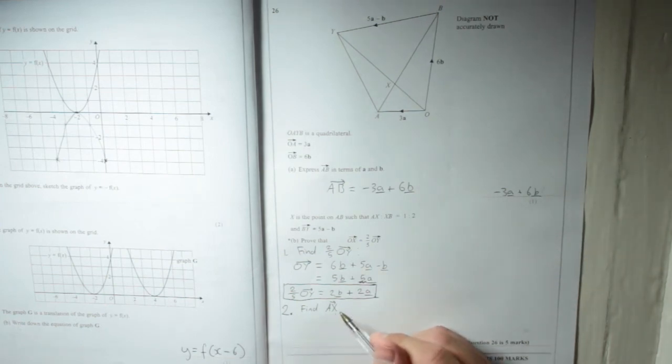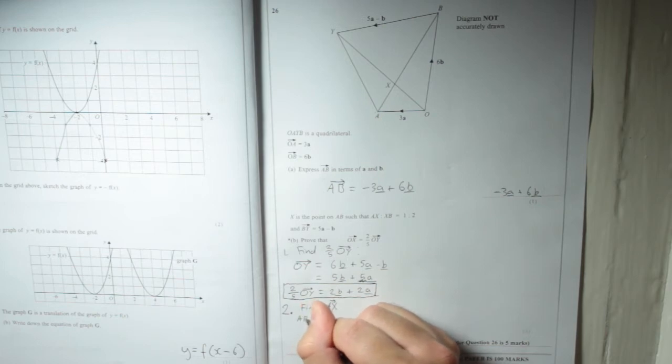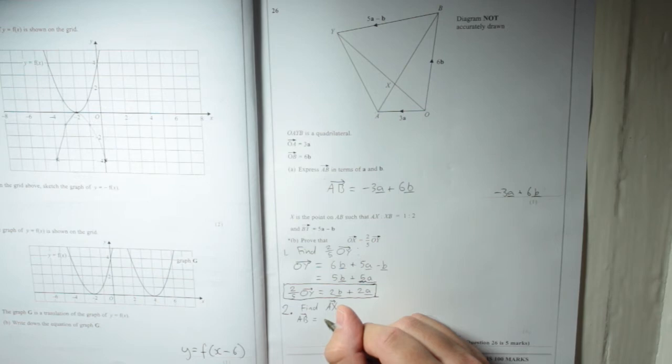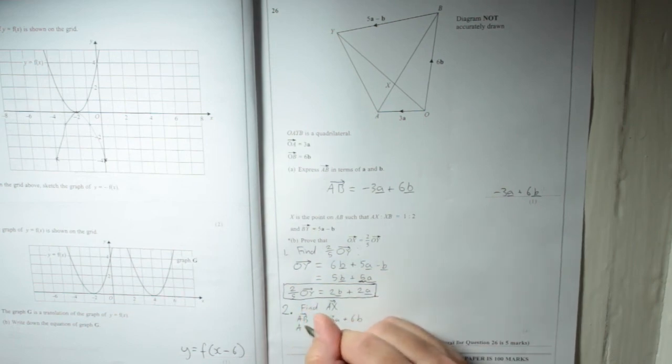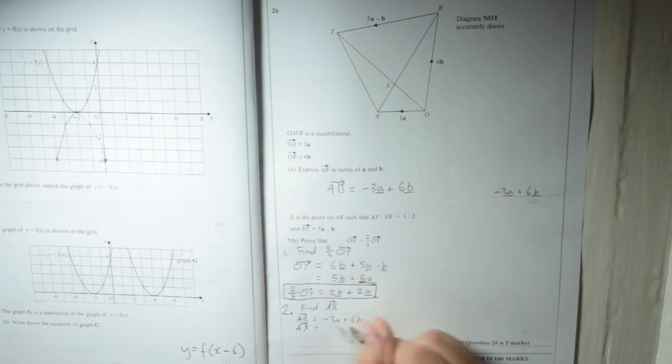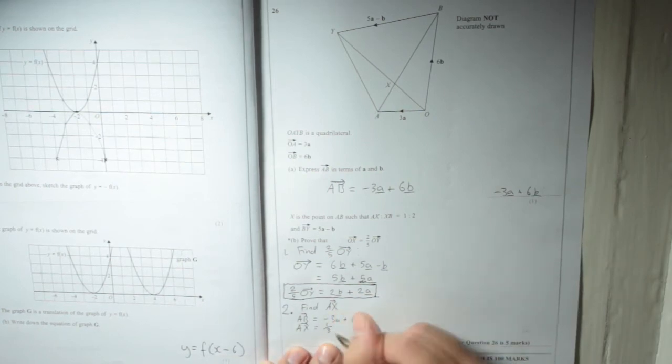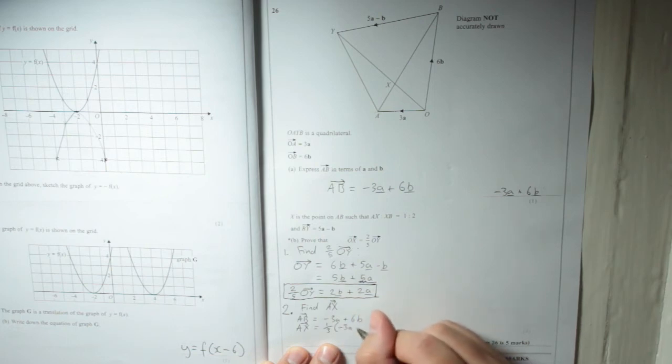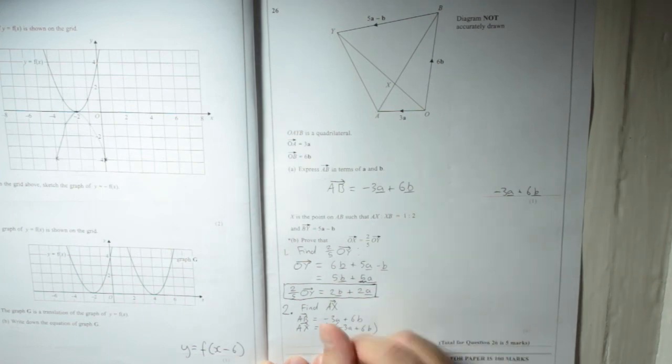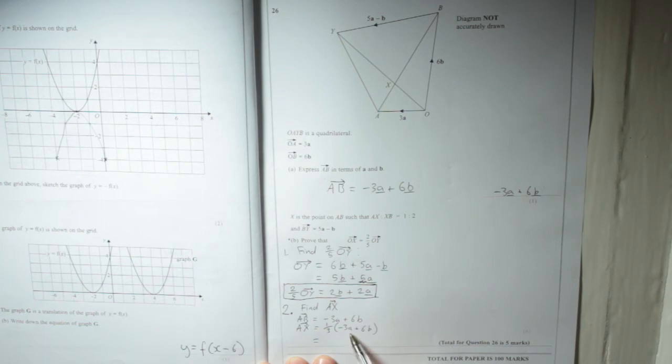Now, AX, let's just remember that AB, as we had before, is equal to minus 3A plus 6B. So, AX is a-third of that. So, a-third of minus 3A plus 6B, which is equal to... A-third of minus 3A is minus 1A, so minus A. And then, a-third of 6B is 2B. So, we've got minus A plus 2B. So, we've just found what AX is.